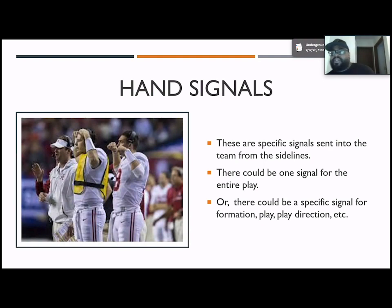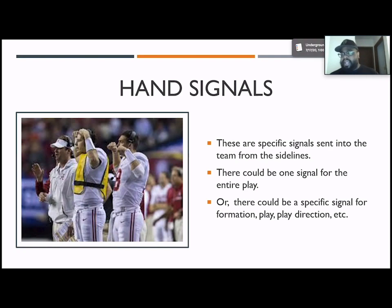Now, into hand signals. These are specific signals that you send into the team from the sideline. You can have one signal for an entire play, or you can have many signals. As you see in the picture, you have two guys signaling — one can be the real signaler and one can be a dummy signaler, or both can be signalers signaling different things. When I use signals, I had three people: one giving the formation, one giving the play, and one was a dummy. The dummy guy is just giving anything to throw off the defense. The formation guy does the formation and the direction of the formation. The play signaler signals the play and the direction of the play. We're able to get all that information in without anyone coming to the sideline, which gives us the advantage in running plays.